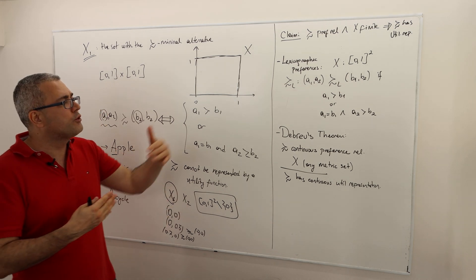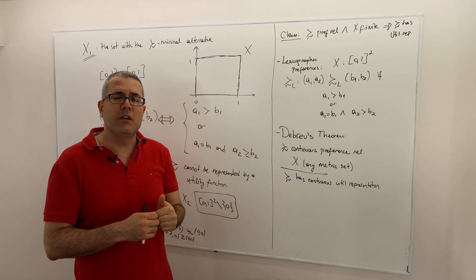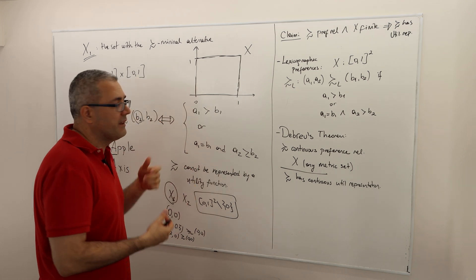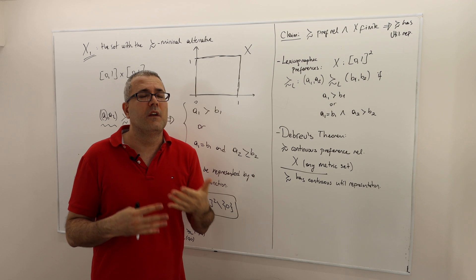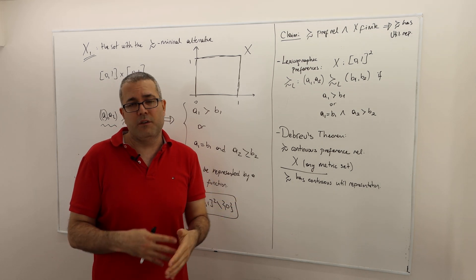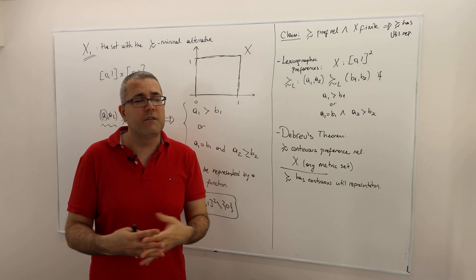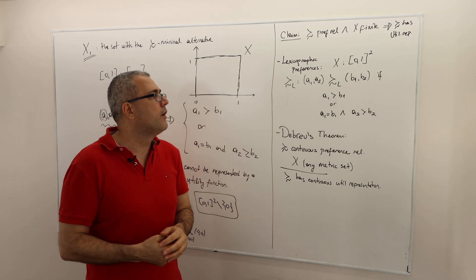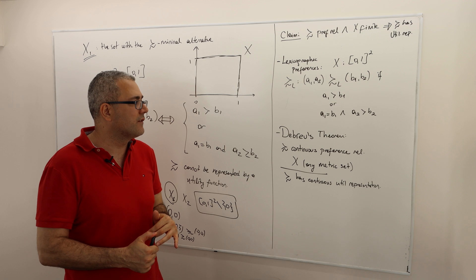But that's not the proof that lexicographic preferences cannot be represented by a utility function — it just means this particular construction won't work. There might be many other ways of constructing a utility function. There is a more elegant proof; maybe in another episode I'll talk about it, but not this one.